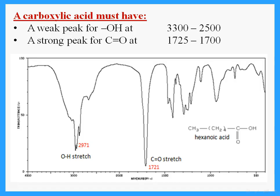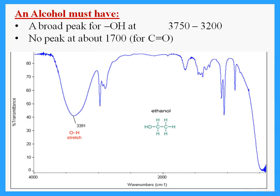At around 1720, you should have a big peak meaning I have a C=O. If there is no strong peak in that area, then there is no C=O. The OH is very clear at around 3000 — a broad peak there indicates OH. The presence of both these peaks indicates a carboxylic acid. But for an alcohol, there is no peak at around 1700, only a peak at around 3300.